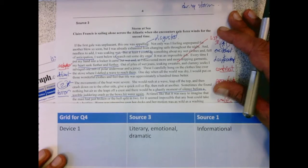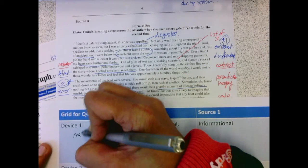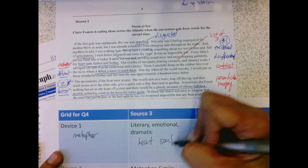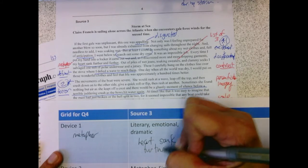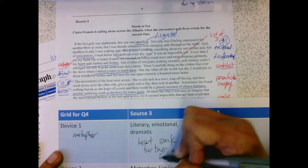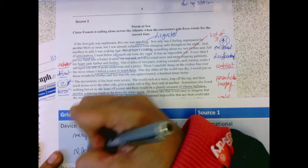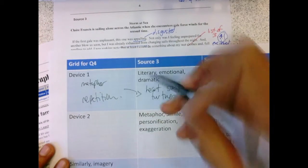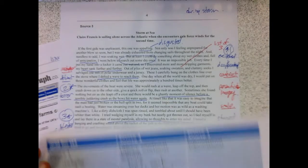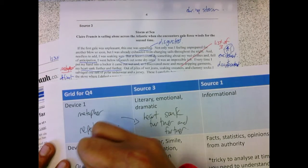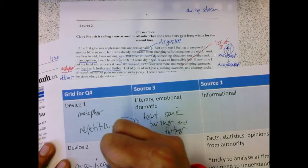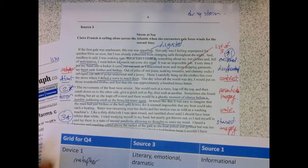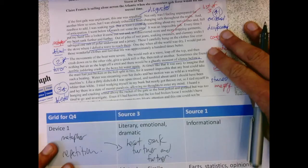So the first device we saw was Metaphor, and we're going to use HeartSank further and further. I could, if I wanted to, add repetition there, too. Okay, so those are there. For device two, personification of the boat. She. Leap. Crash.